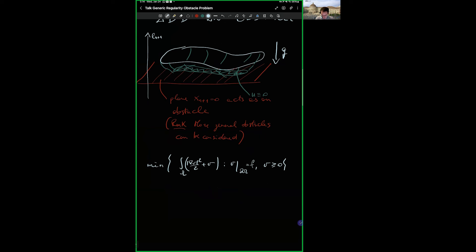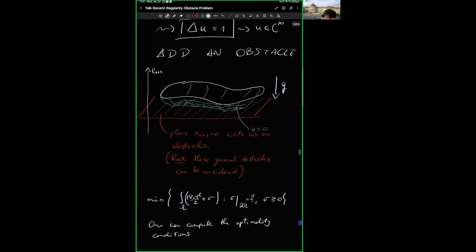So the obstacle problem is: minimize the integral of |grad v|^2 / 2 plus v over omega — elastic energy plus potential energy — with the constraint that v equals f on the boundary, and also that v is non-negative (it cannot cross the obstacle x_{n+1} = 0). This is a nice convex variational problem; existence and uniqueness of minimizers follows with no problem. Now the question is: what can we say about u?